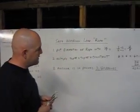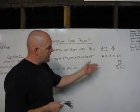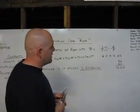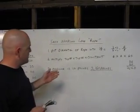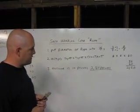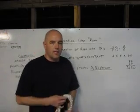So you multiply six times six times 60, and you get 2,160. Now the answer has to be in pounds, so we answer 2,160 pounds. This is how you find the safe working load for rope. Thank you.